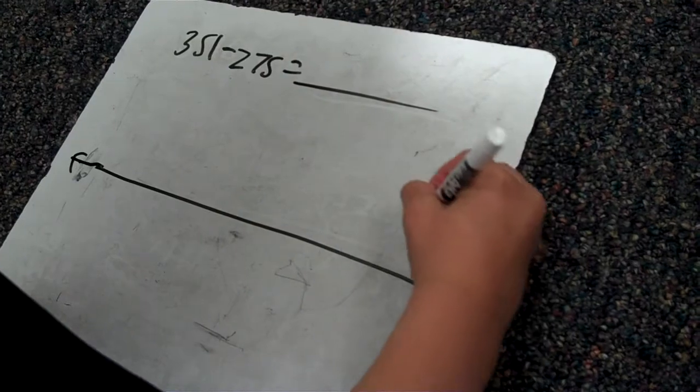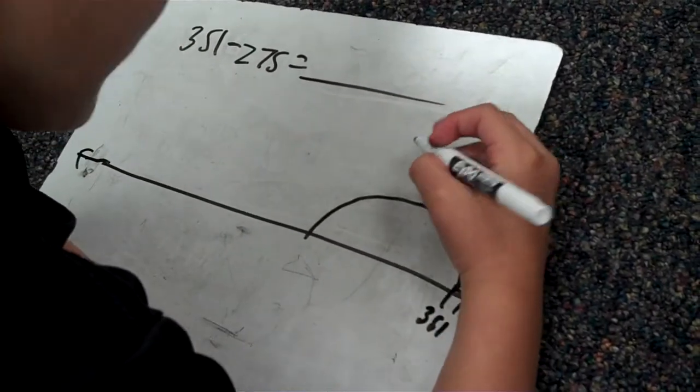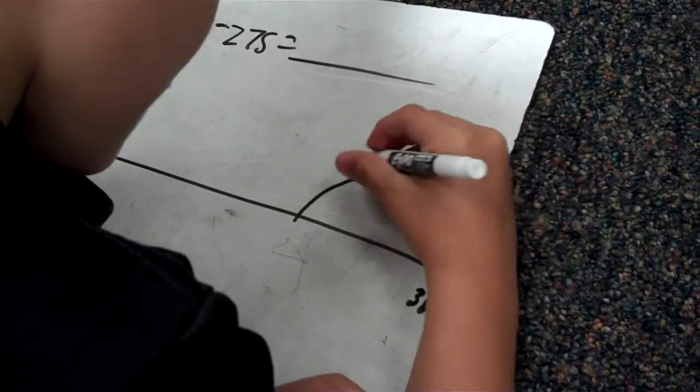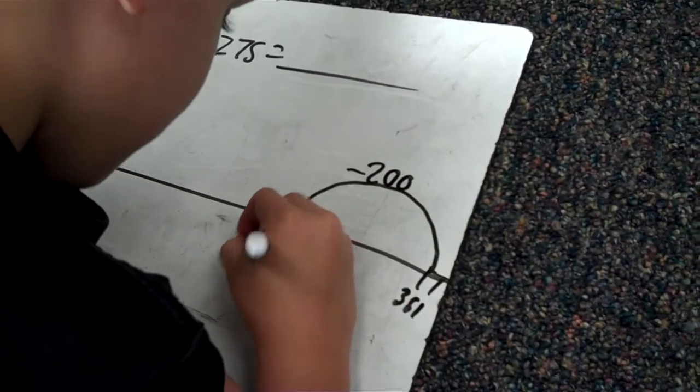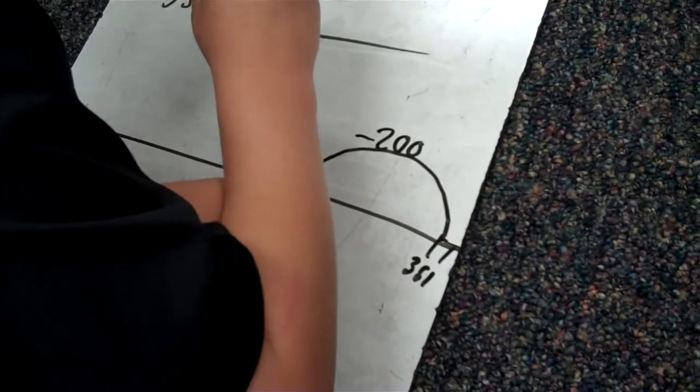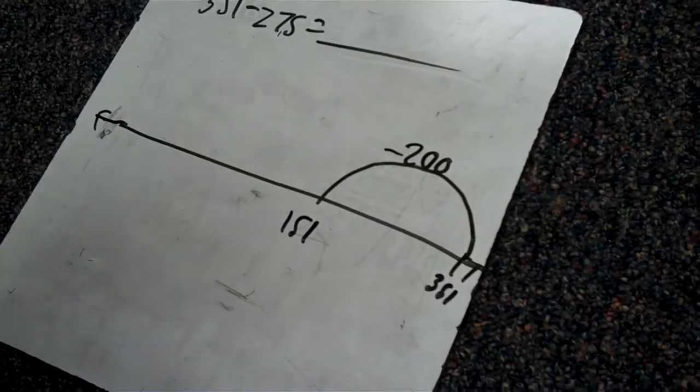So I already know what 3 plus 2 equals, which is 300 minus 200 equals 151. Now we break down 70. Mm-hmm. Like, we broke down 90. Okay.